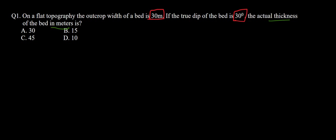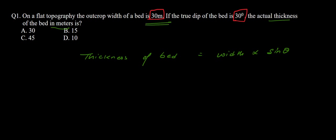The general formula for the thickness of the bed is: thickness = width × sin θ, where the width is the outcrop width of the bed and θ is the angle of the dip of the bed. So here, the width will be 30 meters and we multiply by sine 30 degrees.